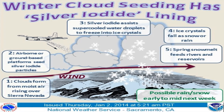Here we have shown a picture of winter cloud seeding with silver iodide. This cloud seeding was done at Sacramento on January 2nd, 2014. In the first step, clouds form from moist air rising over Sierra Nevada. In the second step, airborne or ground-based platforms seed silver iodide particles. In the third step, silver iodide assists super-cooled water droplets to freeze into ice crystals. In the fourth step, ice crystals fall as snow or rain. In the fifth step, snowmelt feeds rivers and reservoirs. From seeding to rain, it may take approximately one week.